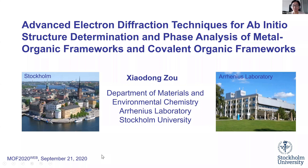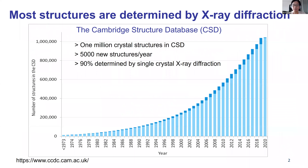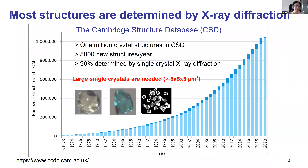We just heard about Professor Obayagi's talk about fascinating structures that have been discovered and synthesized. All these beautiful structures were determined mostly by X-ray diffraction. More than one million crystal structures have been deposited in the Cambridge Structure Database, with 5,000 new structures deposited every year, and more than 90% are determined by single crystal X-ray diffraction.